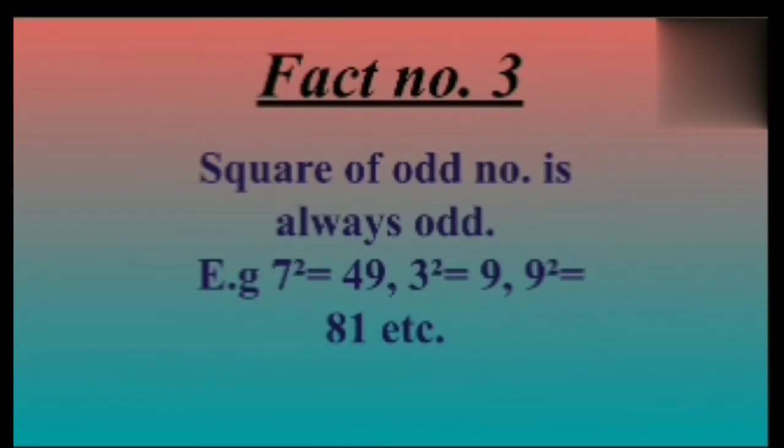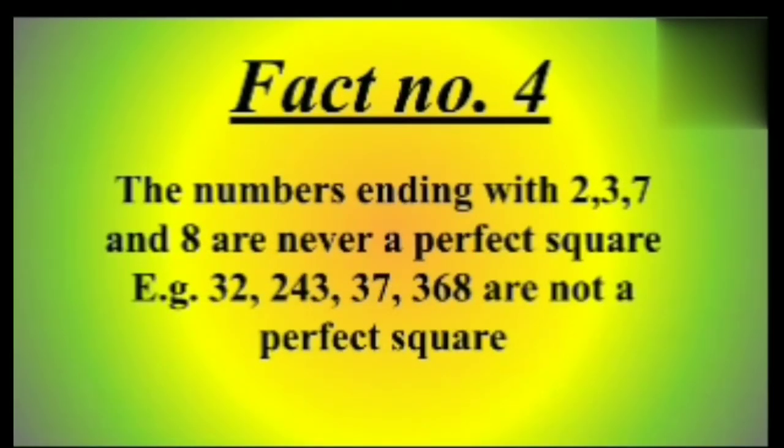Fact number three: Squares of odd numbers are always odd. For example, 7 squared equals 49, 3 squared equals 9, and 9 squared equals 81. All are odd numbers.